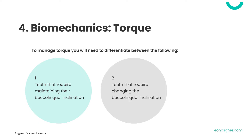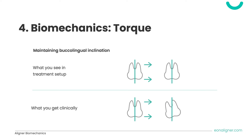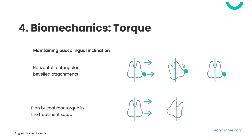The first step in managing torque is to differentiate between teeth that require changing their torque and those which need their torque maintained. When moving a tooth bodily in a buccal direction, buccal inclination or tipping is likely to occur. To counteract this, plan movements with attachments so that every time the tooth tips buccally, the attachment will exert an extrusive force to correct its inclination. Another way to maintain buccolingual inclination is to compensate by planning a lingual or palatal inclination in anticipation of buccal tipping.